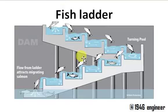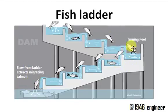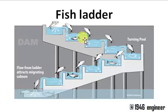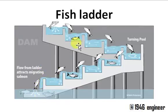When we construct dams, barrages, or weirs, it is going to obstruct the fish migration. So there is a provision made for the fish to migrate from one side of the irrigation structure to the other side. Water flows from the upstream side to the downstream side in different steps, attracting the fish to migrate. Such provision is called a fish ladder.